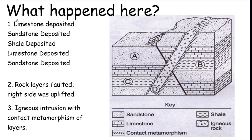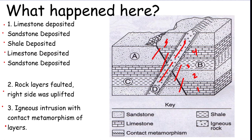Here's an example: all the rock layers — limestone, sandstone, shale, another limestone, and sandstone — were deposited first. Then they all got faulted, shown by that bold diagonal line. After that, an igneous intrusion came in and created contact metamorphism. You know the fault happened before the intrusion because the intrusion is not cut by the fault — it's not split.